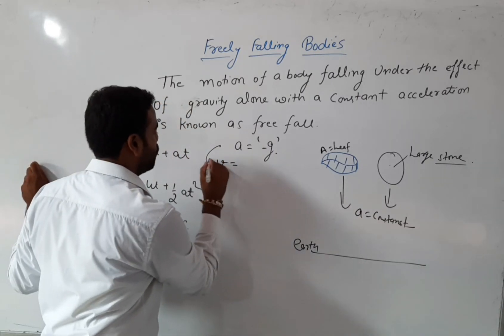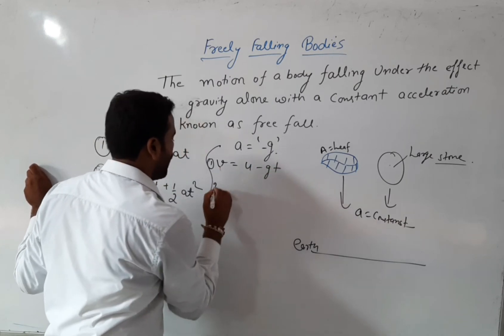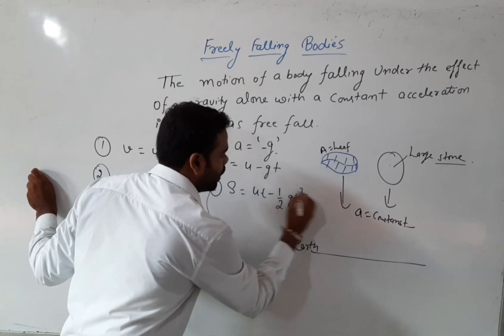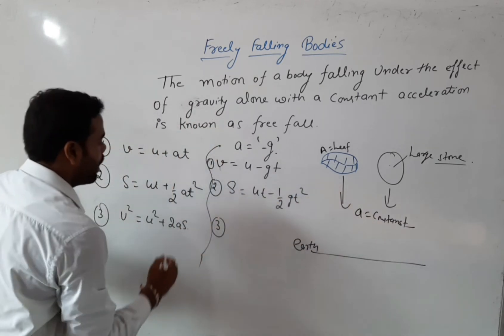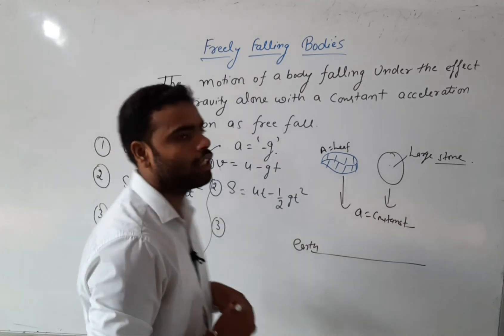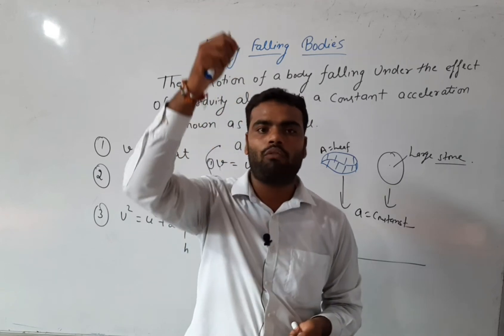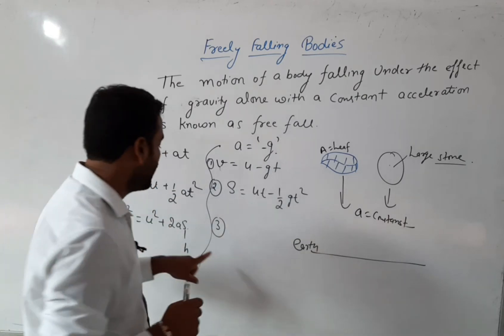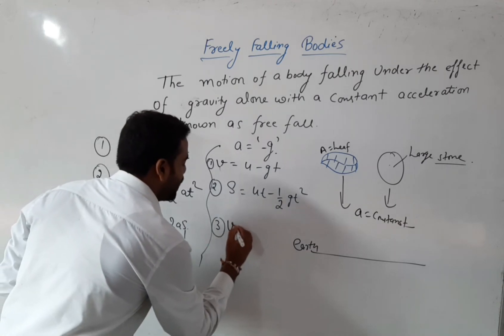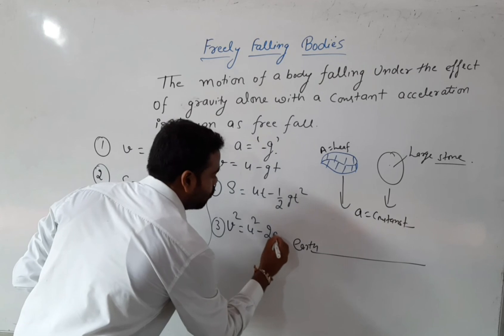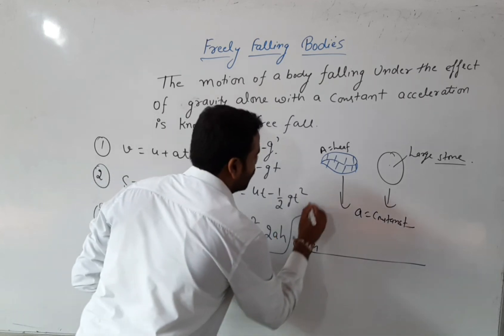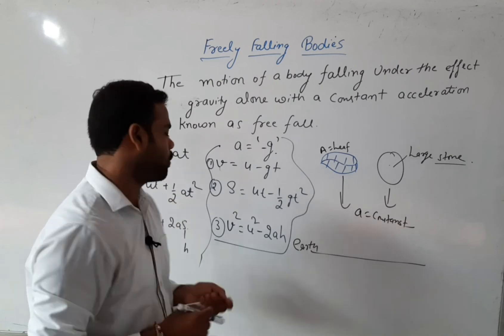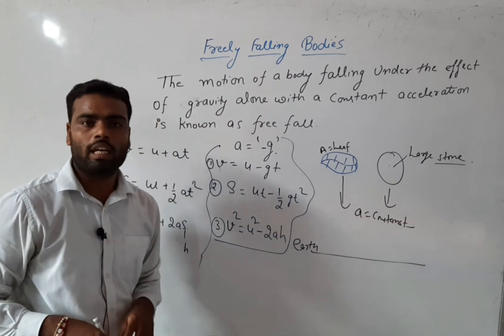If we put g in place of a, then our three equations become: first, v = u − gt; second, s = ut − ½gt²; and third, v² = u² − 2ah — where s is replaced by h because we are talking about a certain height, not just distance. So h represents the height.